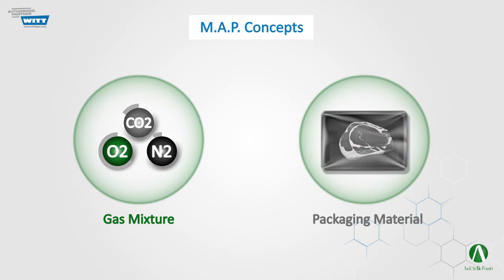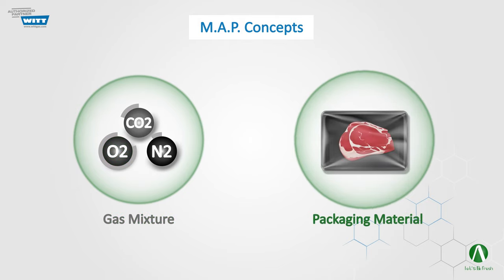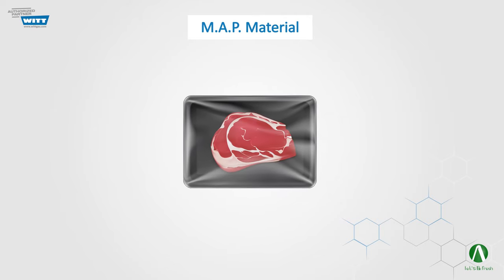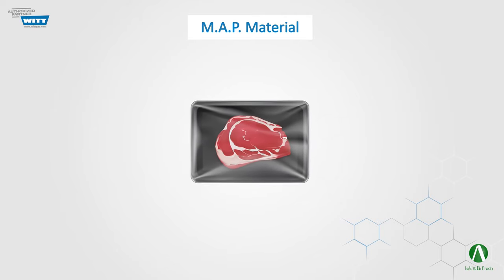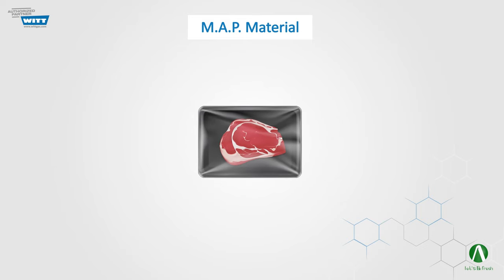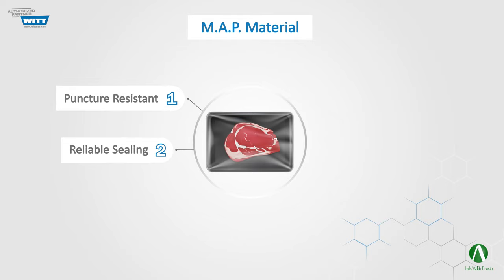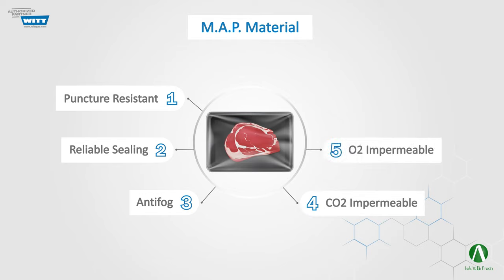Now that we've got familiar with the gas mixture concepts, let's see how we should choose the best packaging material, as it is essential to maintain the quality and safety of MAP foods. There are six main characteristics to consider when selecting packaging material for modified atmosphere packed foods: resistance to puncture, sealing reliability, anti-fogging properties, carbon dioxide impermeability, oxygen impermeability, and low water transmission rate.